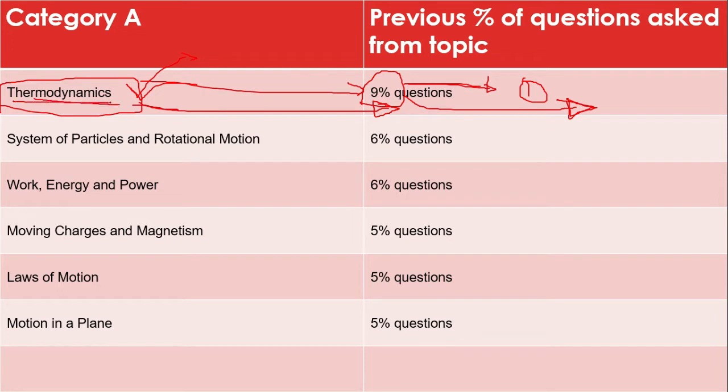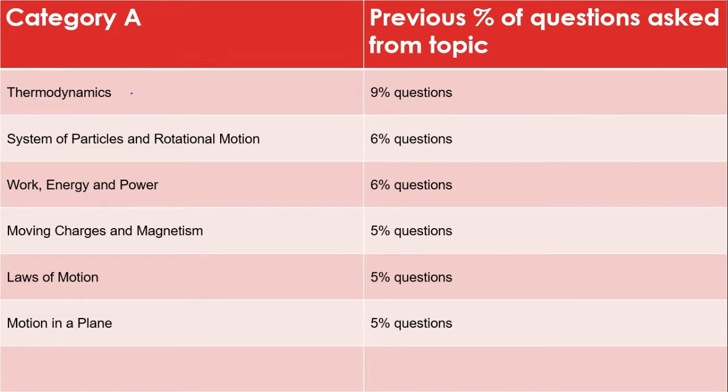You can't leave this topic. If you prepare thermodynamics, it will be useful in thermal properties of matter and work energy and power also. This topic is most important for your MSET examination. Expected questions from this topic are 3 to 5 both including physics and chemistry. One more advantage of thermodynamics is this is an easy chapter compared to any other chapters in your preparation. Please don't leave this topic. This is most important topic.